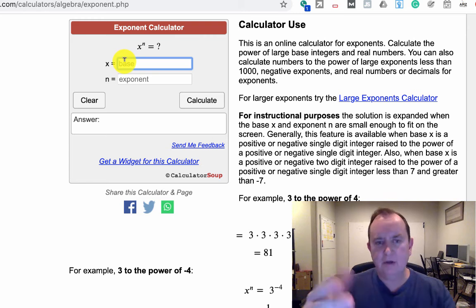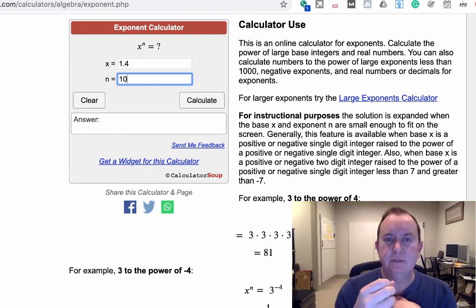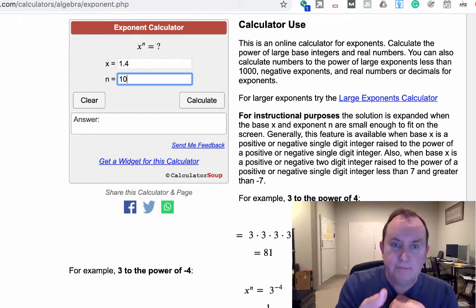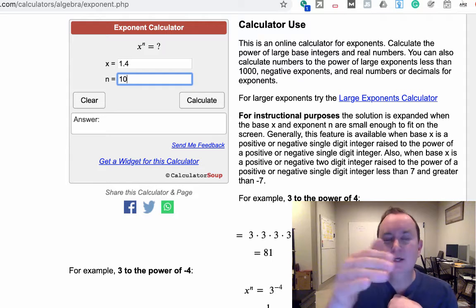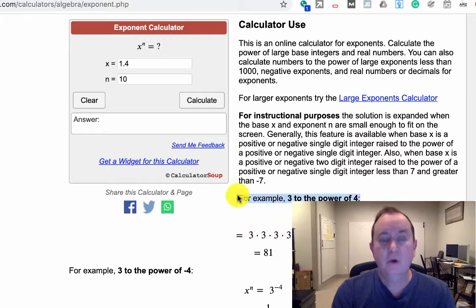In this calculator, the R-naught value for the common flu is 1.4. Let's assume that we do 10 hops. I see somebody, that person sees 1.4 people, they see 1.4 people each, and so on down the line until you hit 10 hops. It's this succession of calculations, or 1.4 to the power of 10.